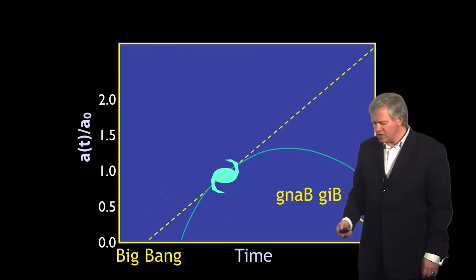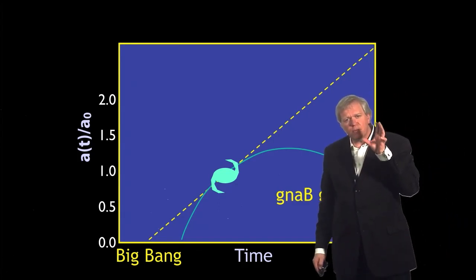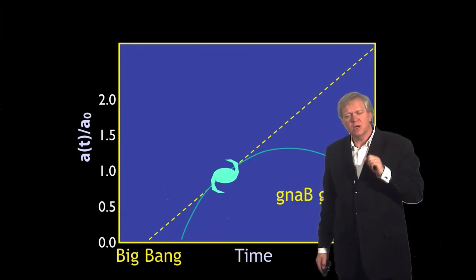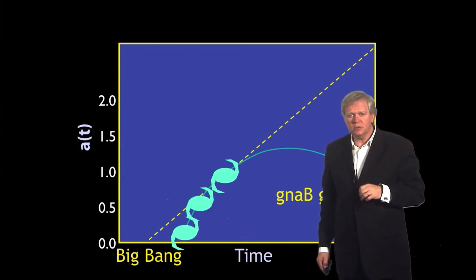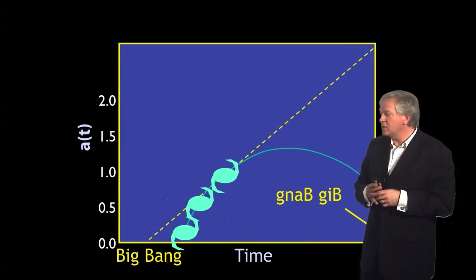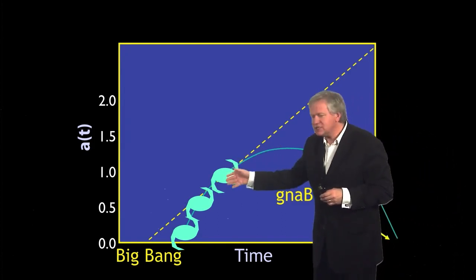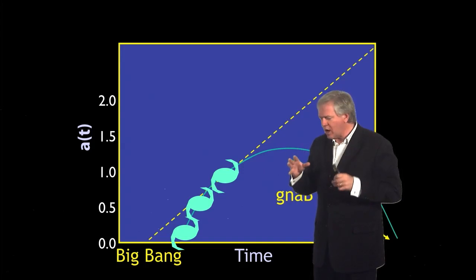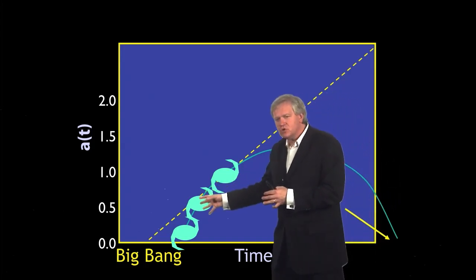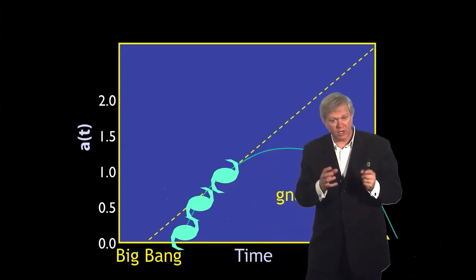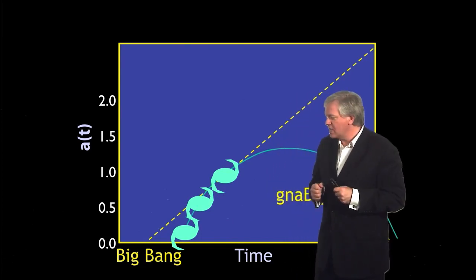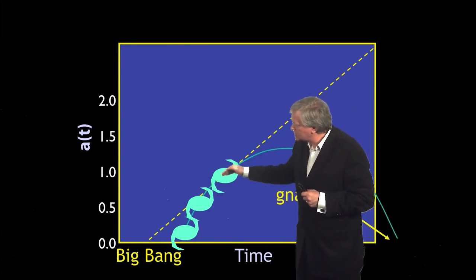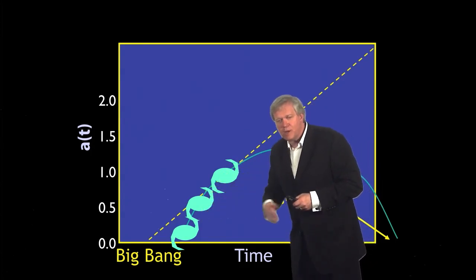You can think about how you might do this if you could look back in time by looking at more and more distant objects. For example, if the universe is going to eventually stop, the galaxies in the past, if I look at further and further objects, I will be able to measure the scale factor from the redshift and measure their distances, and that will tell me essentially the trajectory of the universe back in time.